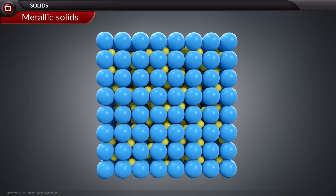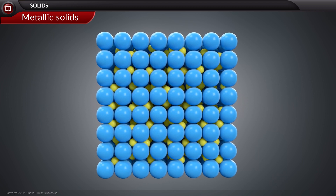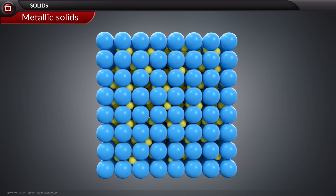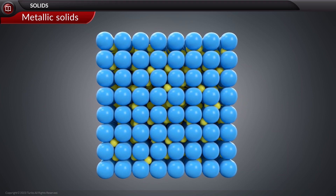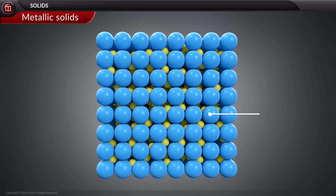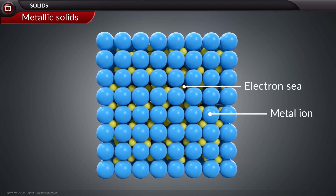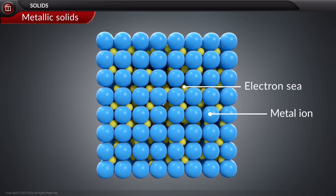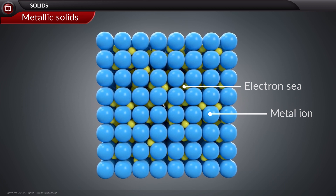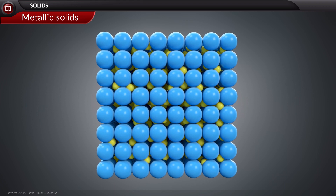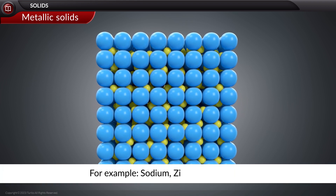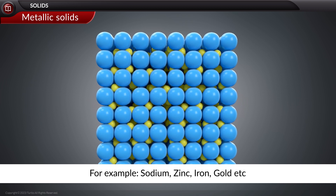Last is the metallic solid. Metallic solids show the presence of a metallic bond. The creation of metallic bonds is caused by the attraction between positively charged ions and a sea of electrons. Due to the difference in the strength of the metallic bond, the melting point of metals is variable. Examples include sodium, zinc, iron, gold, etc.